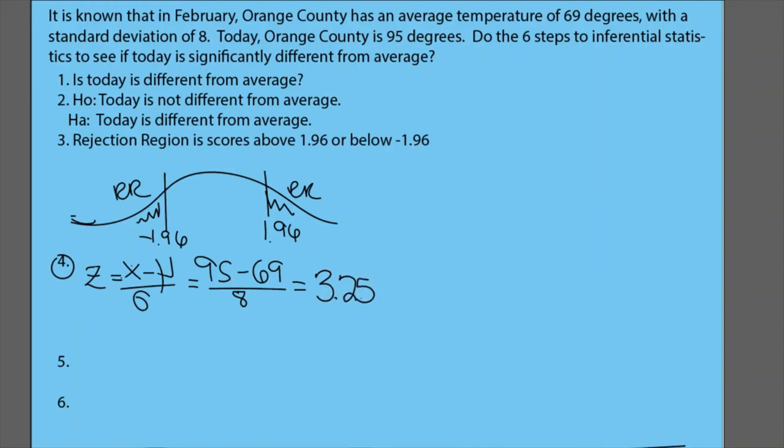That means this z-score is 3.25, which kind of makes sense if you think about it. This 95 is much larger than the 69. So to have such a large z-score is not too surprising.